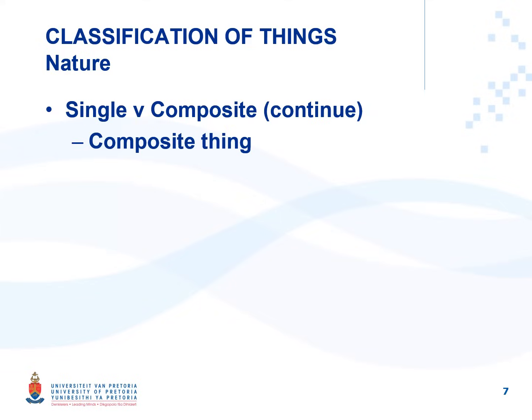Composite things do not have the characteristics of single things. The moment something is an individual thing with independent existence that comprises a single entity with use and value, it isn't a composite thing. A composite thing, although it may not have those characteristics physically, is regarded as a single legal entity in law — it has legal singularity but not physical singularity.